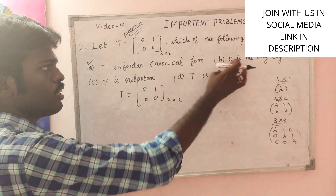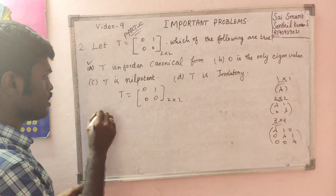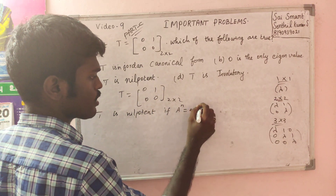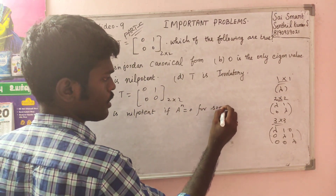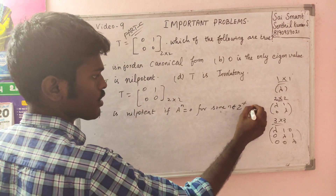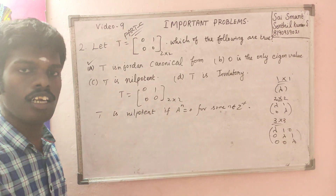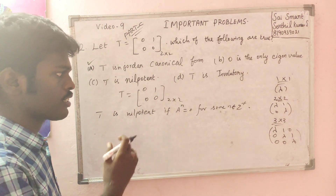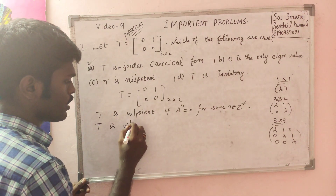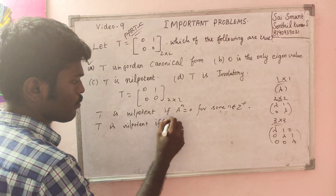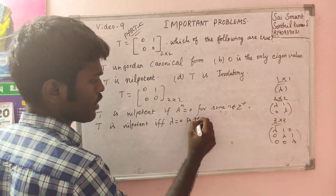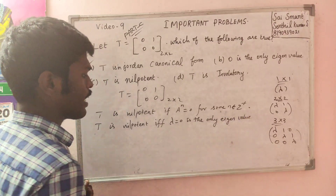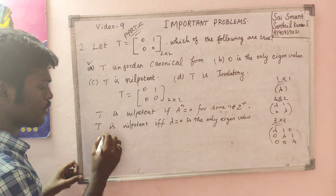T is nilpotent: zero is the only eigenvalue. T is nilpotent means T^n equals zero for some positive integer n. If T^(n−1) is 0, T^(n−2) is 0, T^(n+0) is 0. T is nilpotent if and only if λ=0 is the only eigenvalue. You can check the eigenvalue: T² = [[0,1],[0,0]] × [[0,1],[0,0]].